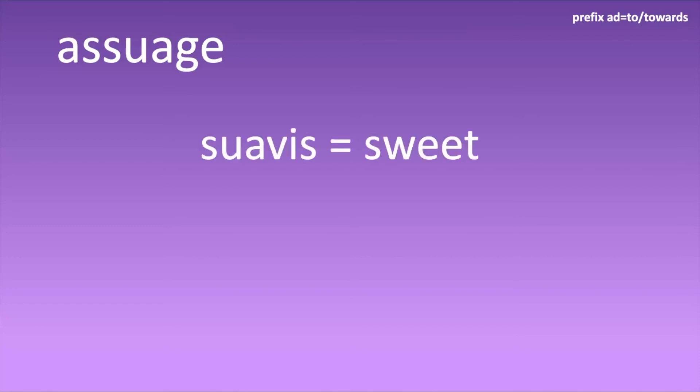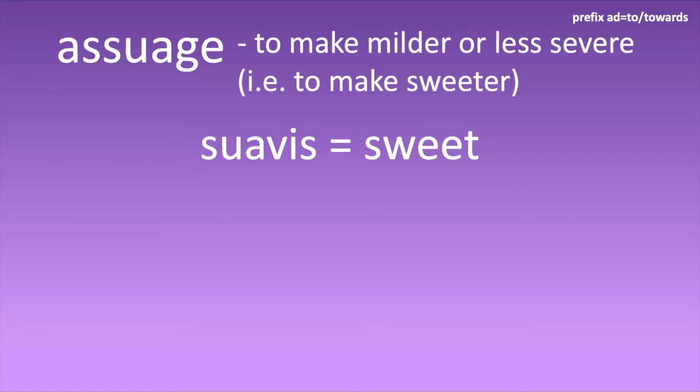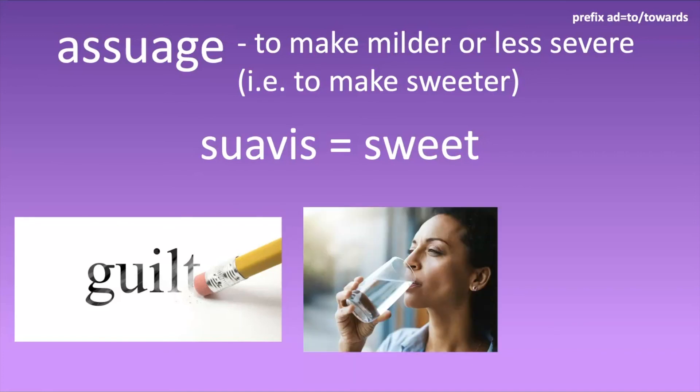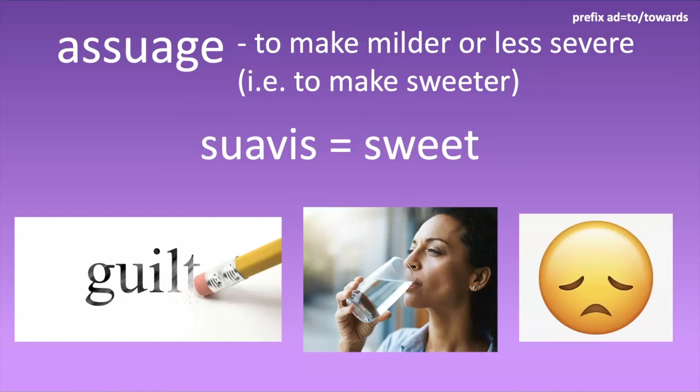The word 'assuage' comes from 'suavis,' meaning sweet. So this is to make sweeter — to make milder or less severe. You can assuage guilt, you can assuage your thirst by drinking, and you can also assuage bad or negative feelings.